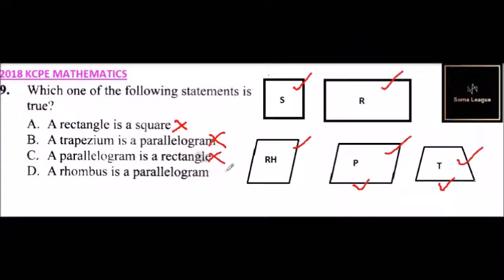A rhombus is a parallelogram. If you look at the shape of a rhombus, they share a common property that they have a pair of parallel lines and the angles are not 90 degrees.